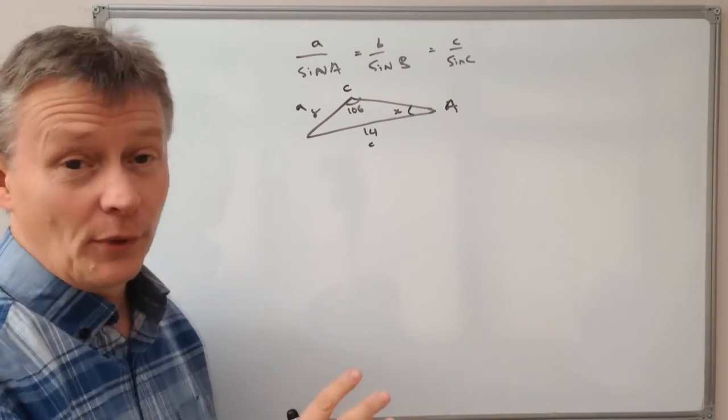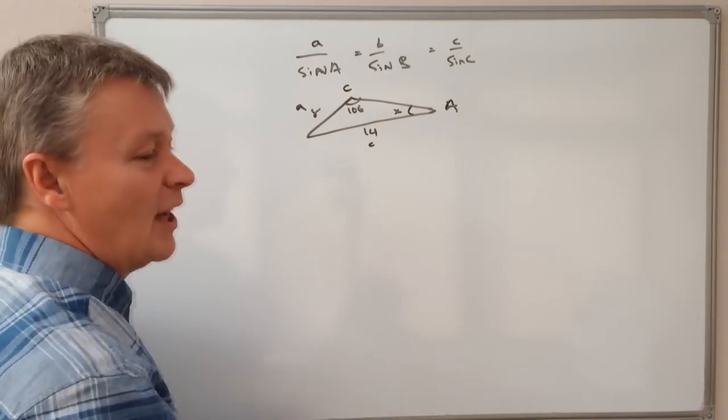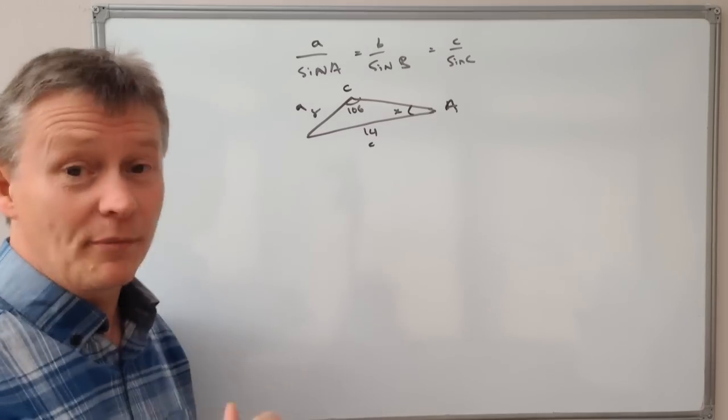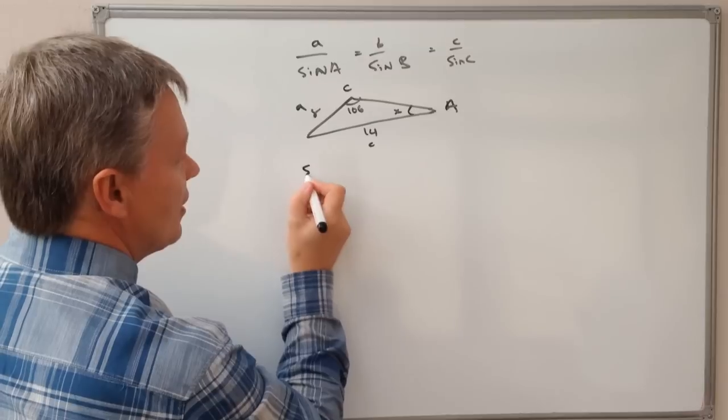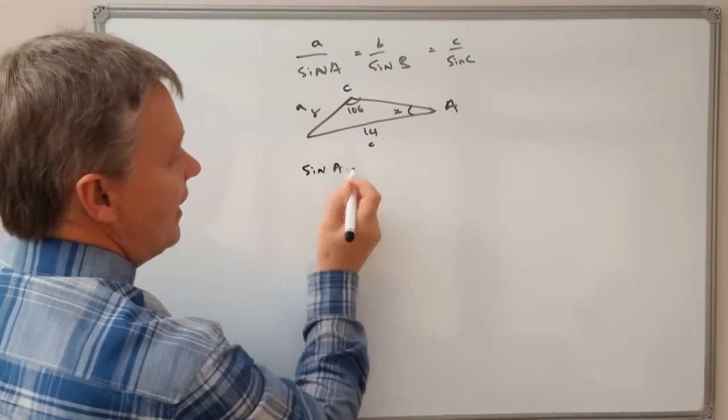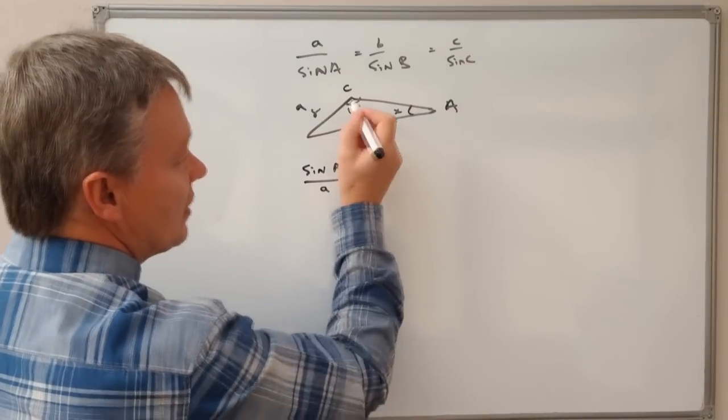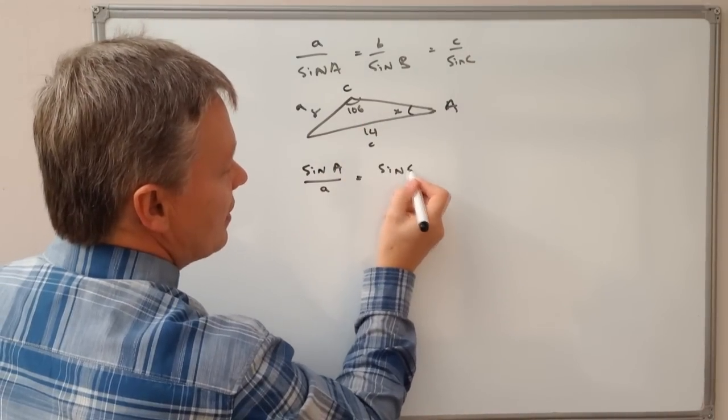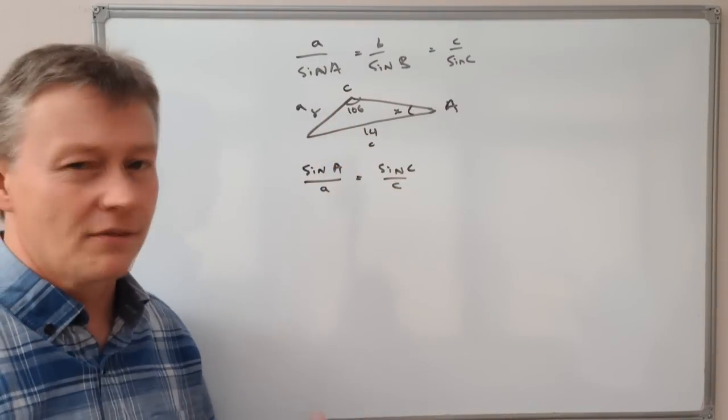You could use it that way around if you wanted to, it just makes it a little bit more complex. So I'm going to flip it the other way around. It doesn't really matter, providing you keep everything equaling each other. So I'm going to use sine A, which is this bit here, over A equals sine C over C. I could equally well have called this B over B, it doesn't really matter.